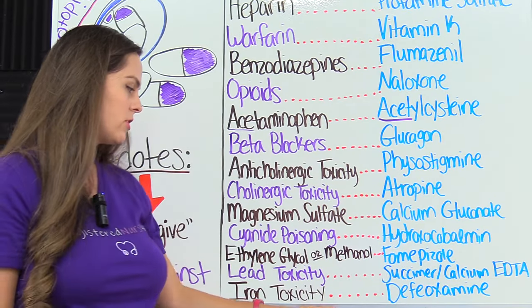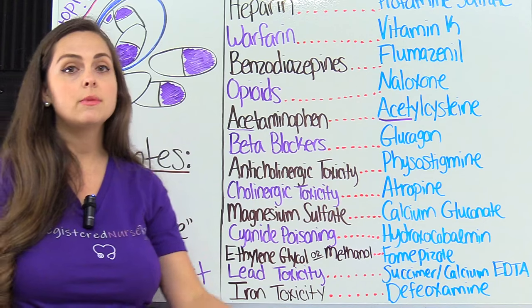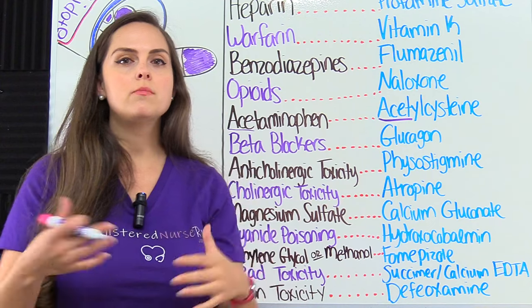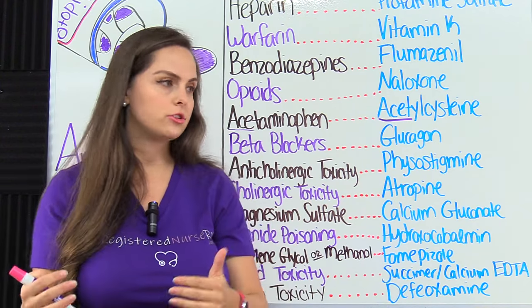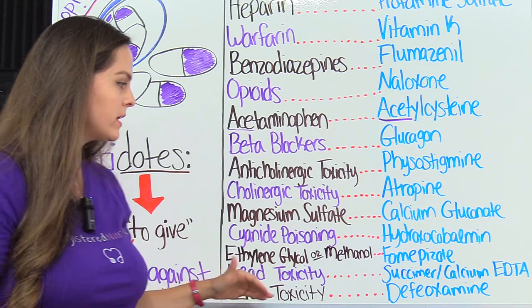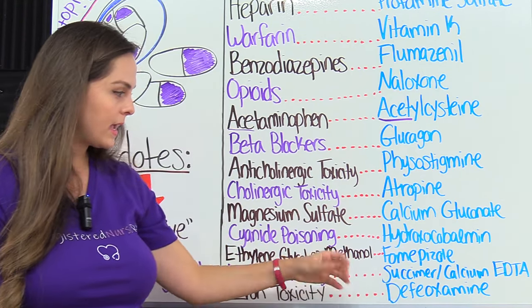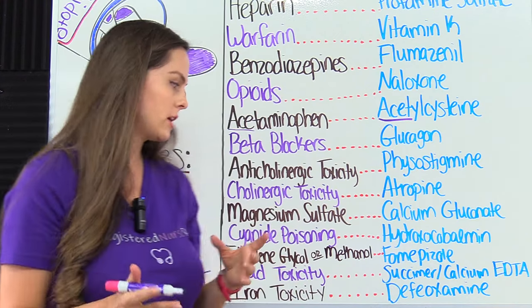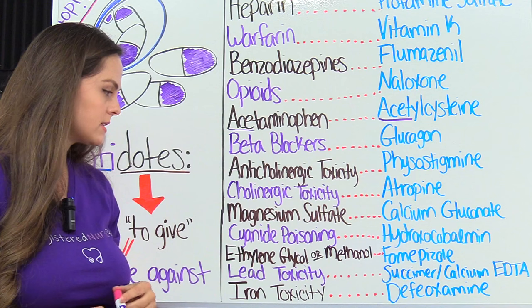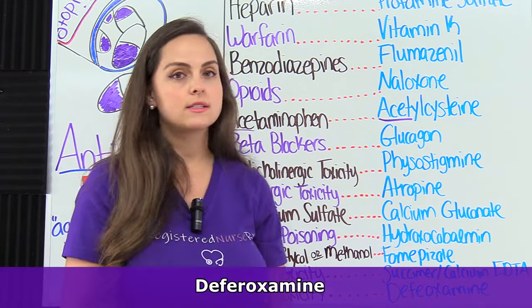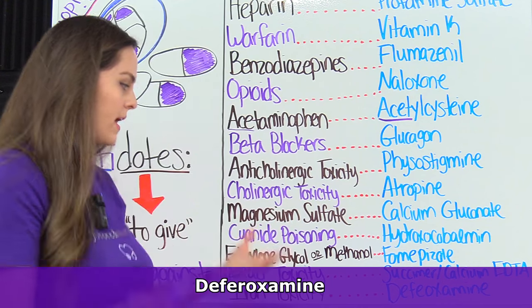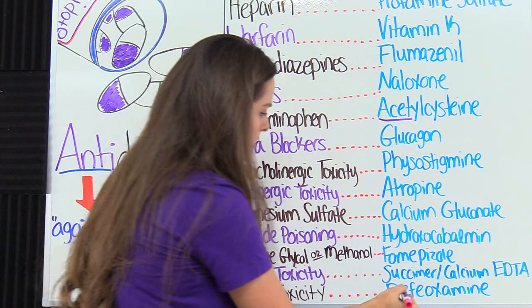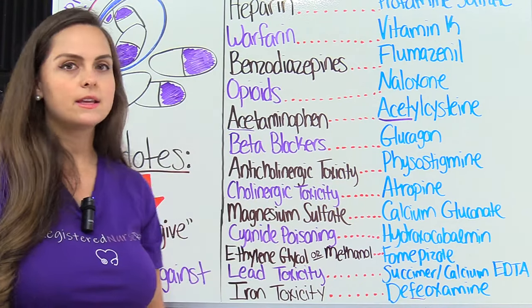Lastly, we have lead toxicity and iron toxicity. With lead toxicity — too much lead in the body — we can do what's called chelation therapy, a method to remove heavy metals from the bloodstream. For lead, we can give an oral chelation medication called succimer, or calcium disodium edetate via injection. Then with iron toxicity, the antidote is deferoxamine. How I remember that is by thinking of iron's chemical symbol Fe — this antidote has 'Fe' in it.